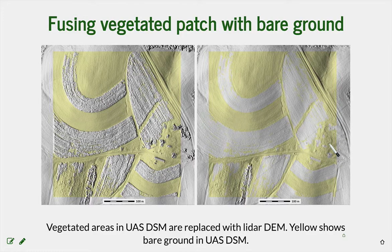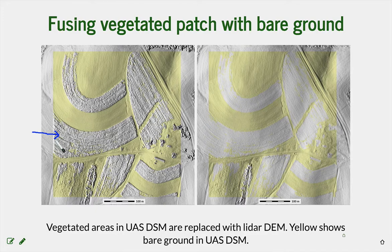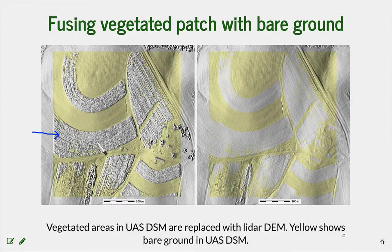We can also use fusion with spatially variable overlap for replacing vegetated areas with bare ground. Here we have areas with crop approximately one meter high that we would like to replace with bare ground. Since it is very difficult to get bare ground information from a UAS digital surface model, but we usually have bare ground represented in the LiDAR data, we can use spatially variable overlap fusion to replace vegetated areas and get a smooth bare ground digital elevation model updated with the latest UAS data.